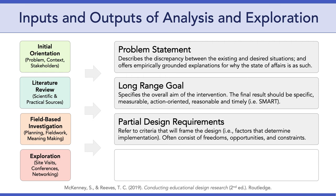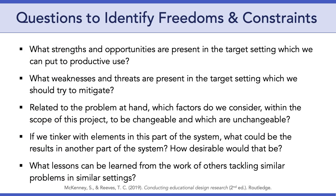The third output is partial design requirements. These refer to the criteria that will frame the design — in other words, factors that will determine implementation. These factors often include freedoms, opportunities, and constraints. In the next phase of DBR, design and construction, we'll focus on design requirements in much more detail. For now, consider useful questions to identify possible freedoms and constraints, such as: 'What strengths and opportunities are present in the target setting which can be put to productive use?' Answering these questions will help you identify partial design requirements for your intervention.